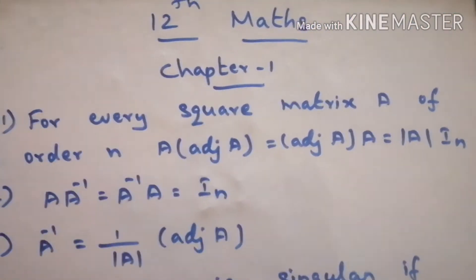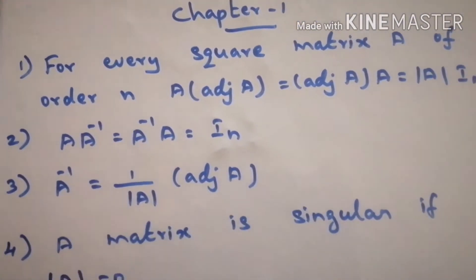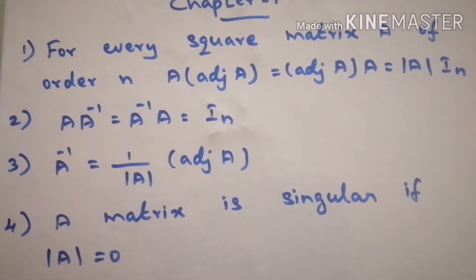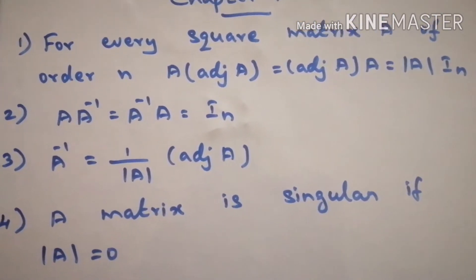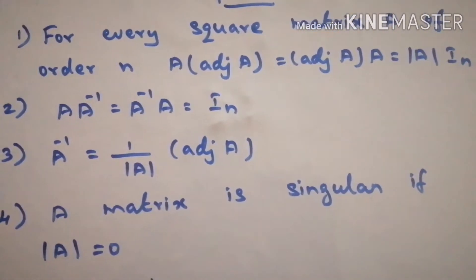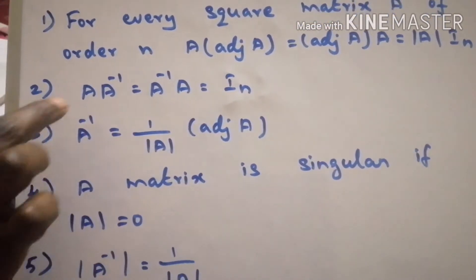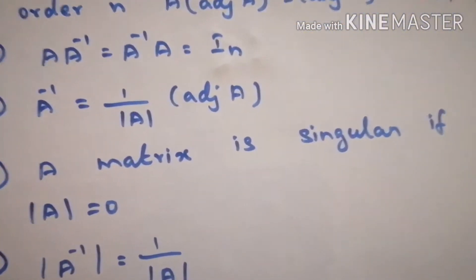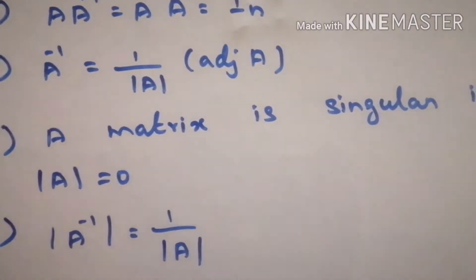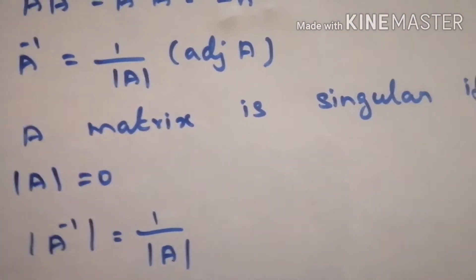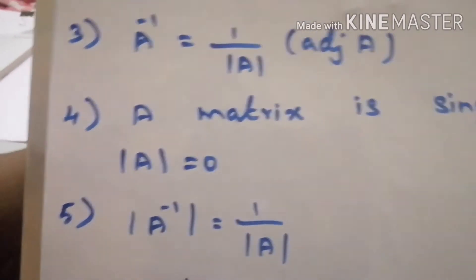12th Max Chapter 1 Formula. For every square matrix A of order n: A into adjoint of A is equal to adjoint of A into A, which is equal to determinant of A into Iₙ. A into A inverse equal to A inverse into A, equal to Iₙ. A inverse equal to 1 by determinant of A into adjoint of A.